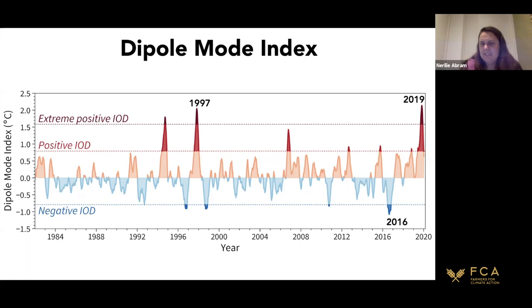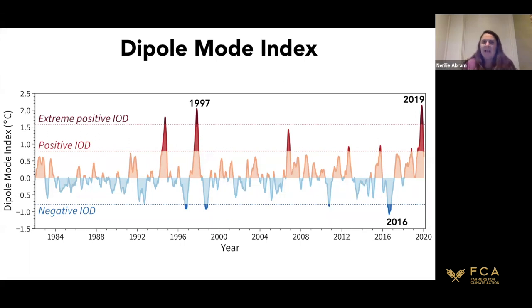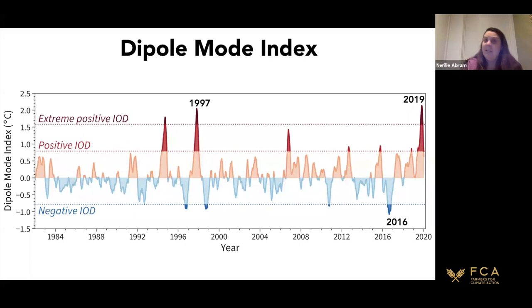We've been studying the IOD for fewer decades than El Niño, and we've had very few big events to study. The 2019 event will give us a lot more information about the dynamics of this system. One important thing to note is that positive events can be very strong — like 1997 and 2019 — whereas negative events don't have the same potential magnitude. The strongest negative event on record was 2016, but its magnitude wasn't as strong as the positive events.